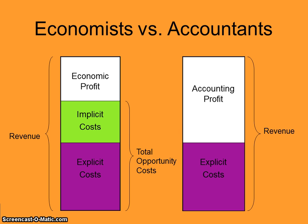Economists view profit differently than accountants do. Accounting profit is always stated at a larger rate than economic profit because accountants do not consider implicit costs of production, whereas economists do. So if you were reporting as an accountant, a normal rate of return of zero would not be acceptable — but as an economist, it is perfectly acceptable because your implicit costs are already covered.